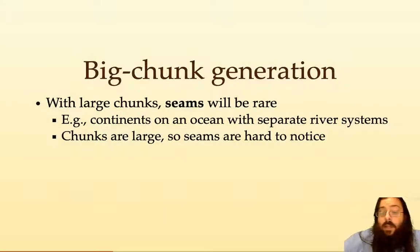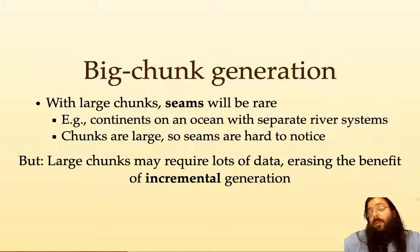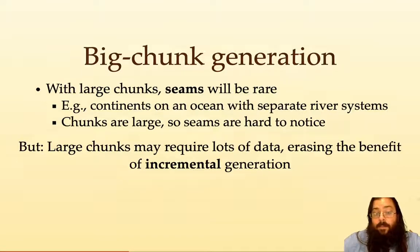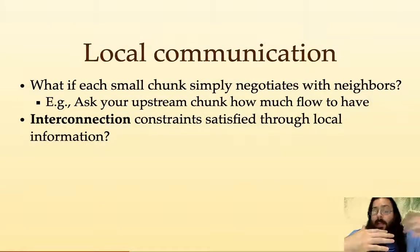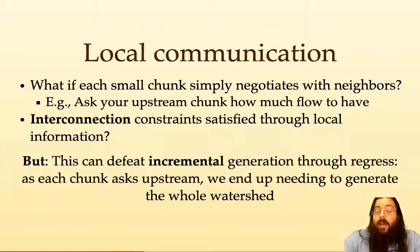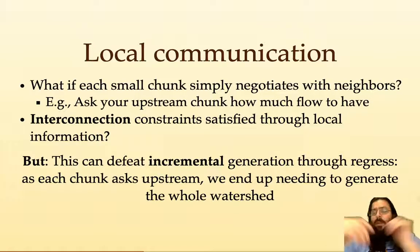With big chunk generation, we have seams that are rare because our chunks are big. But if the chunks are large, we don't get the benefit of incremental generation because we have to generate and store a lot of information up front. With local communication, we could communicate with neighbors, but there's this problem of regress where they communicate with their neighbors, and eventually we generate the whole watershed to figure out what the river value is — and that's not really incremental anymore.